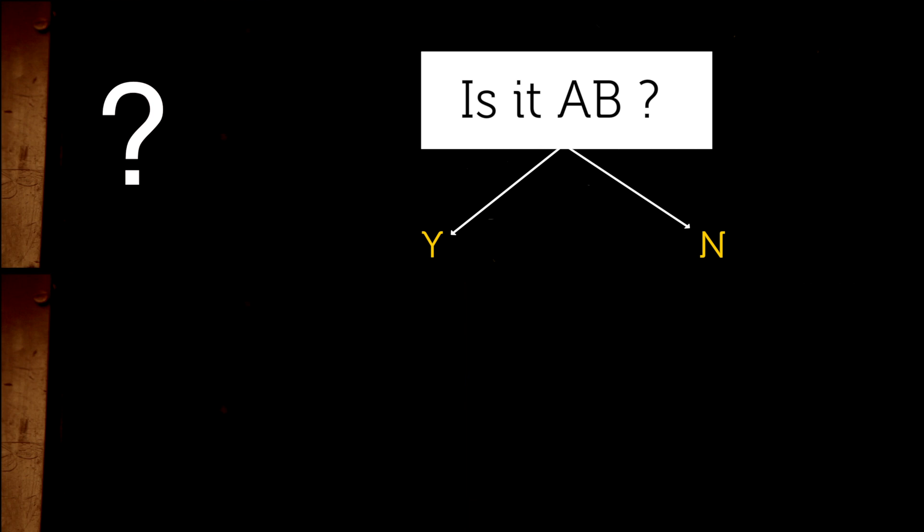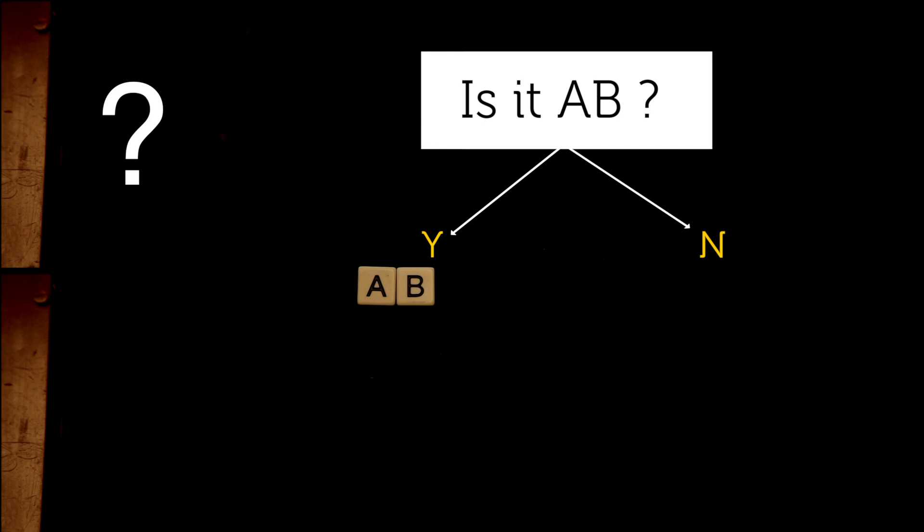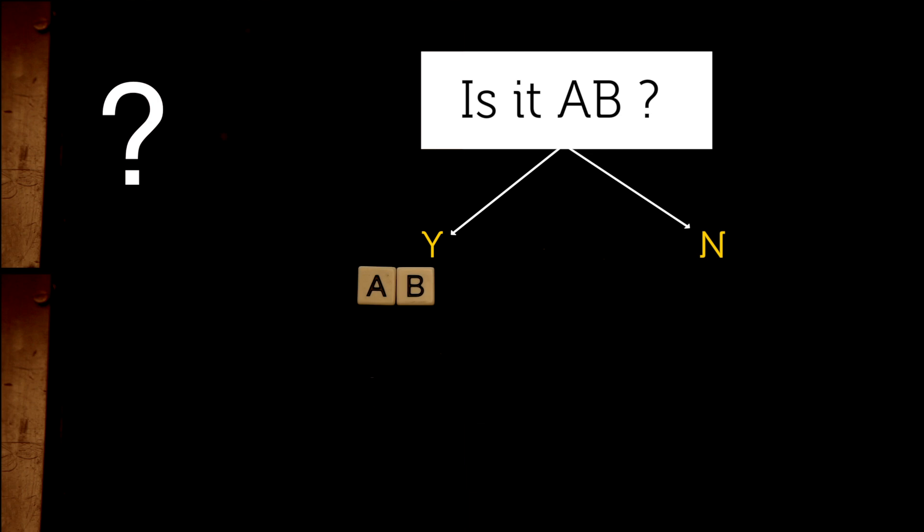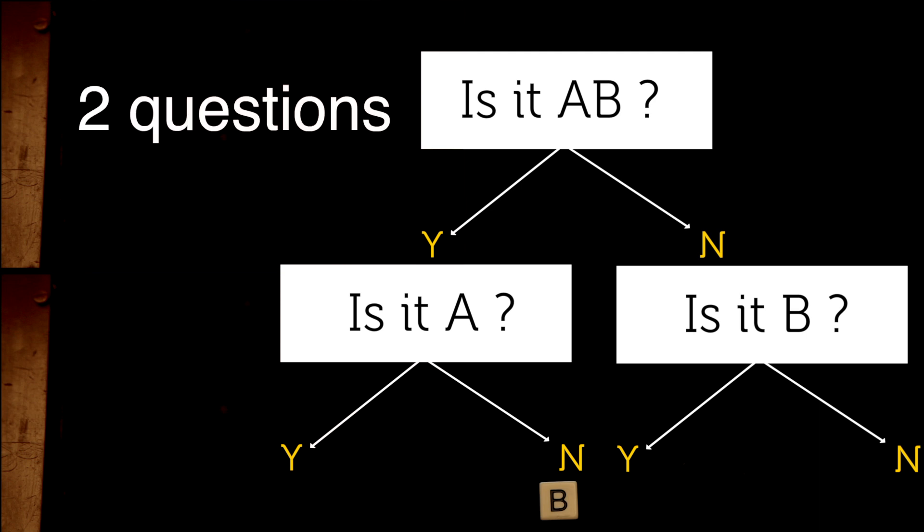After getting the answer, we can eliminate half of the possibilities and we will be left with two symbols, both equally likely. So we simply pick one, such as is it A, and after this second question, we will have correctly identified the symbol. So we can say the uncertainty of Machine 1 is two questions per symbol.